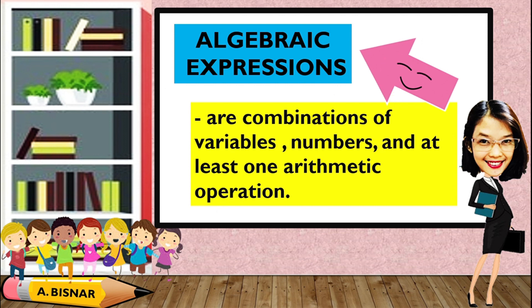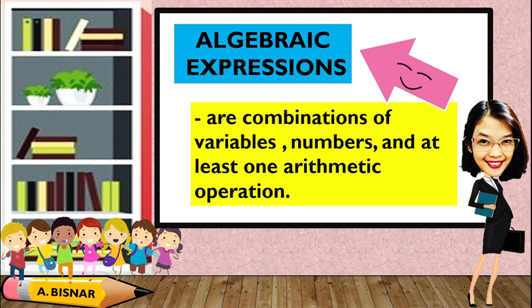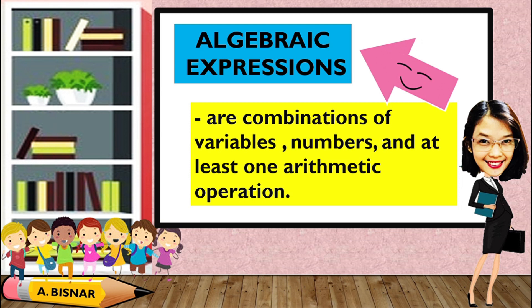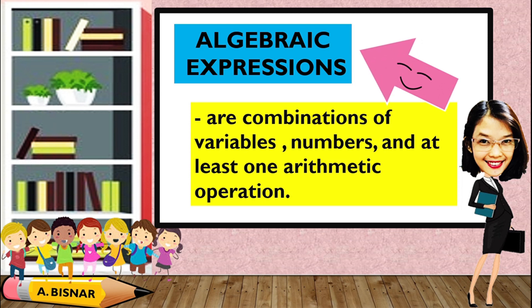Let us start by defining what an algebraic expression is. It is said that these are the combinations of variables, numbers, and at least one arithmetic operation. Now what are those arithmetic operations? We have addition, subtraction, multiplication, and division.